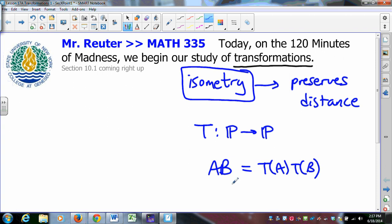For convenience sake, we let A prime represent the image of A, and B prime represent the image of B. So we could rewrite this as AB is equal to A prime B prime.